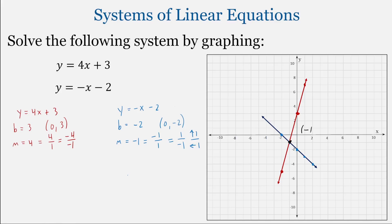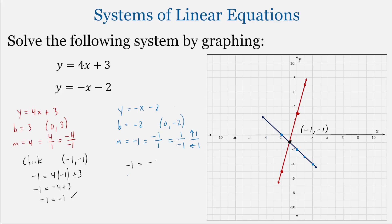The two lines intersect at the point (-1, -1). Let's check this solution. For the first equation: negative 1 equals 4 times negative 1 plus 3, which gives negative 1 equals negative 1 — a true statement. For the second equation: negative 1 equals negative 1 times negative 1 minus 2. Negative 1 times negative 1 is positive 1, so this is 1 minus 2, giving negative 1 equals negative 1 — another true statement. So the solution set to this system of equations is the ordered pair (-1, -1).